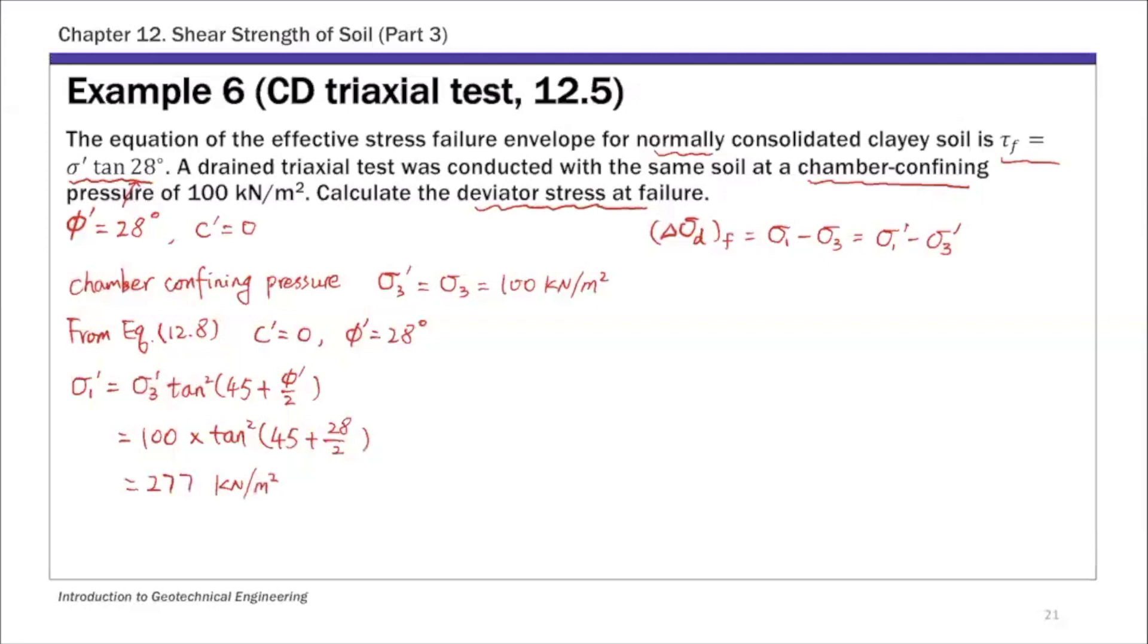Once you have the major principal stress at failure, then the deviator stress is simply the difference between these two. So Δσd at failure is σ1' minus σ3', 277 minus 100, 177 kilonewtons per meter squared. So that is the deviator stress at failure.